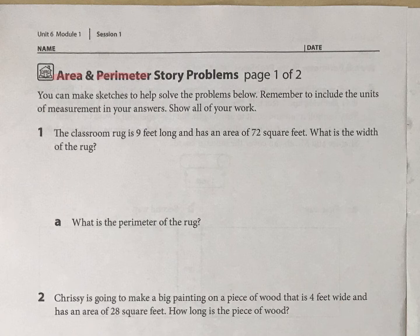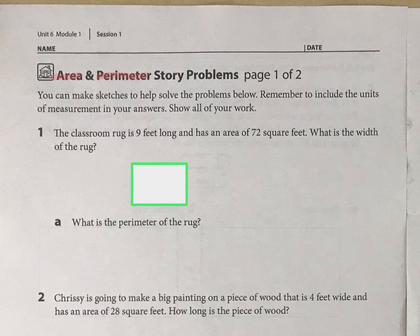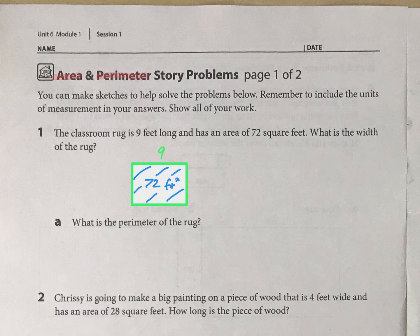An example is probably the best way to explain. If this were a rug for the classroom, it's 9 feet long, and the area is 72 square feet. Basically, the area is what space it takes up, so the blue part is the area, and the perimeter is the space that goes around the outside.